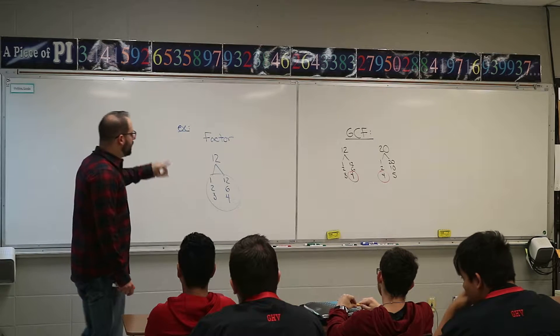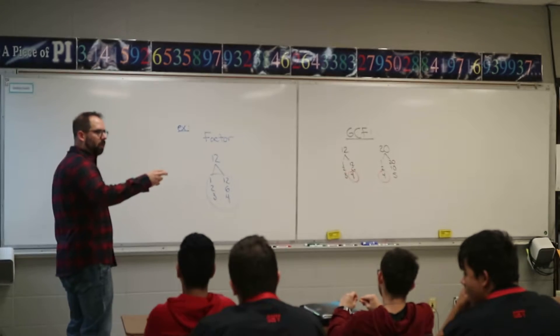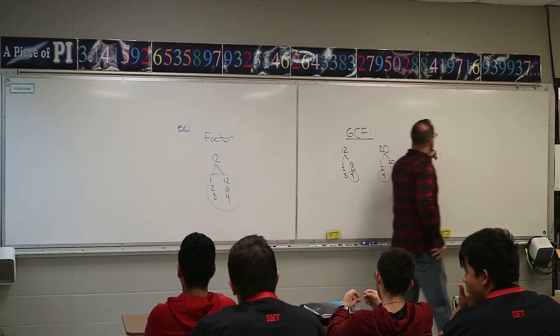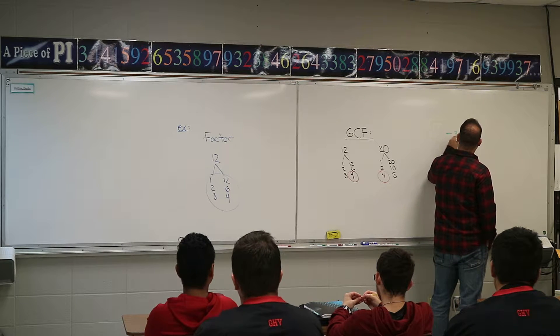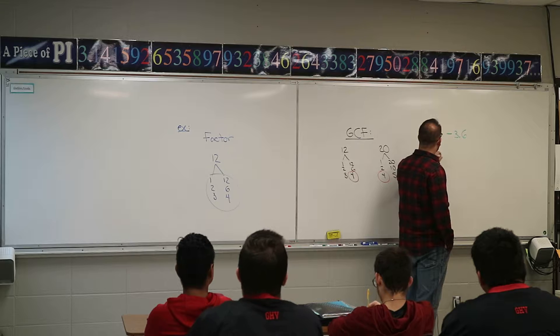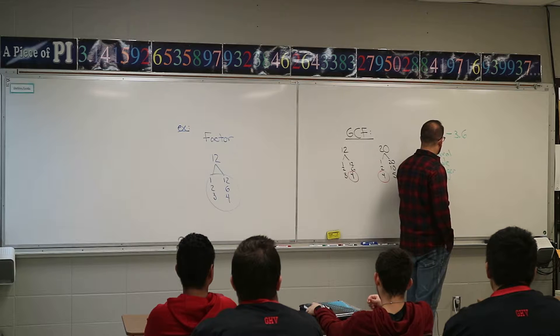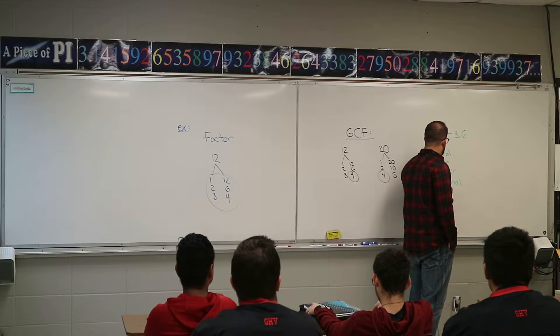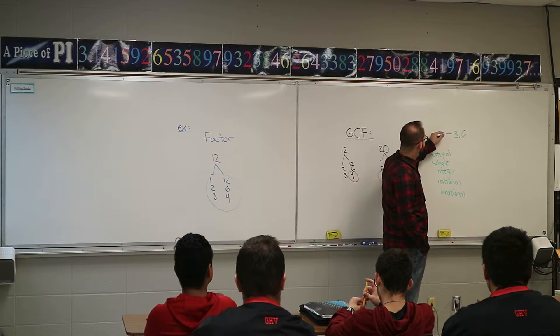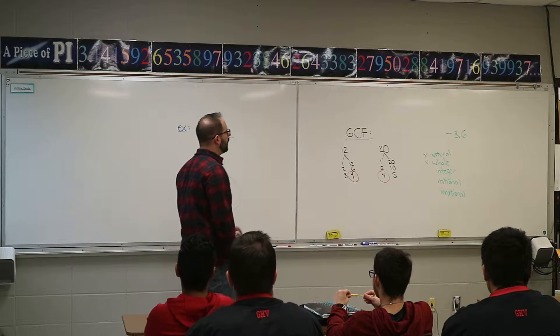The next one was based on naturals, wholes - looking at a number and classifying by what type it was. If I gave you a number like negative 3.6, I'm going to list them: natural, whole, integer, rational, and irrational. These are the different types and you have to figure out which ones does it apply to. Since it's negative, it can't be these two.